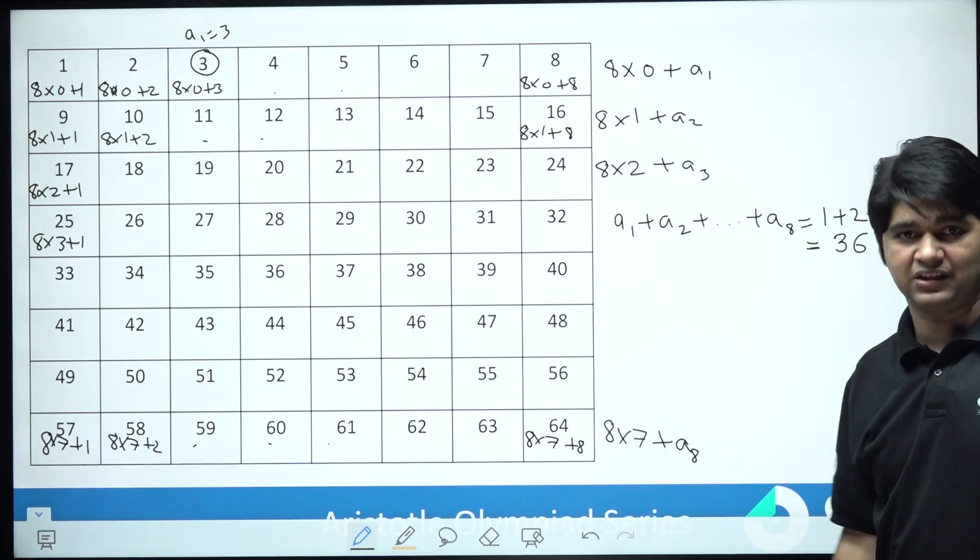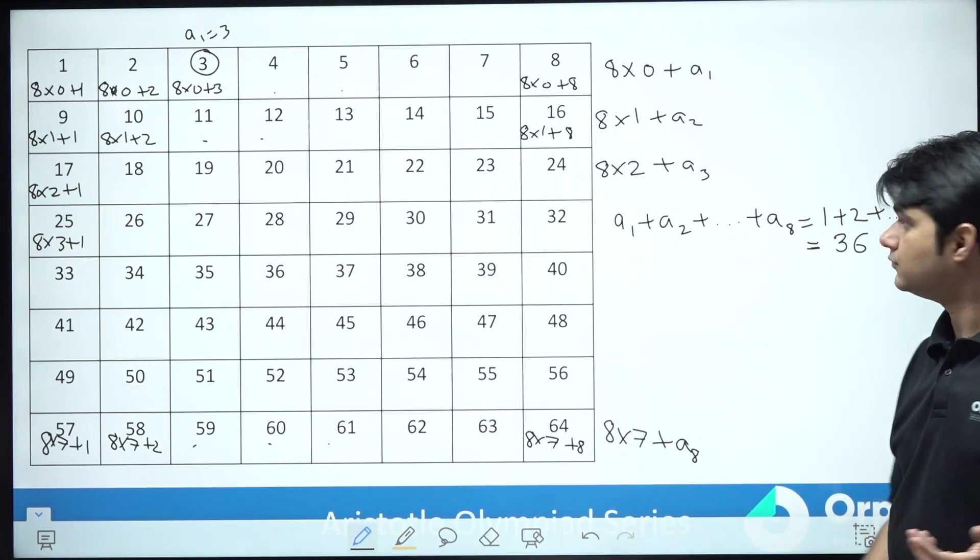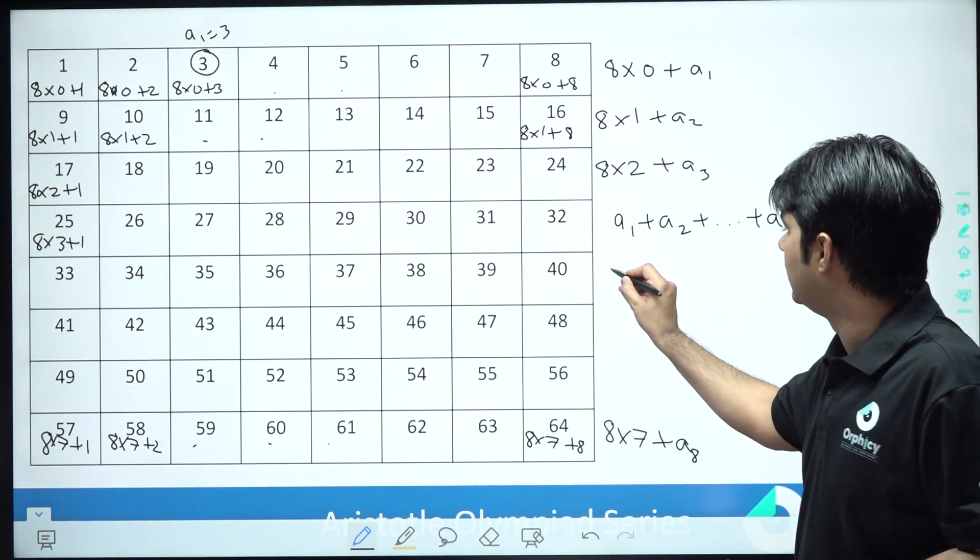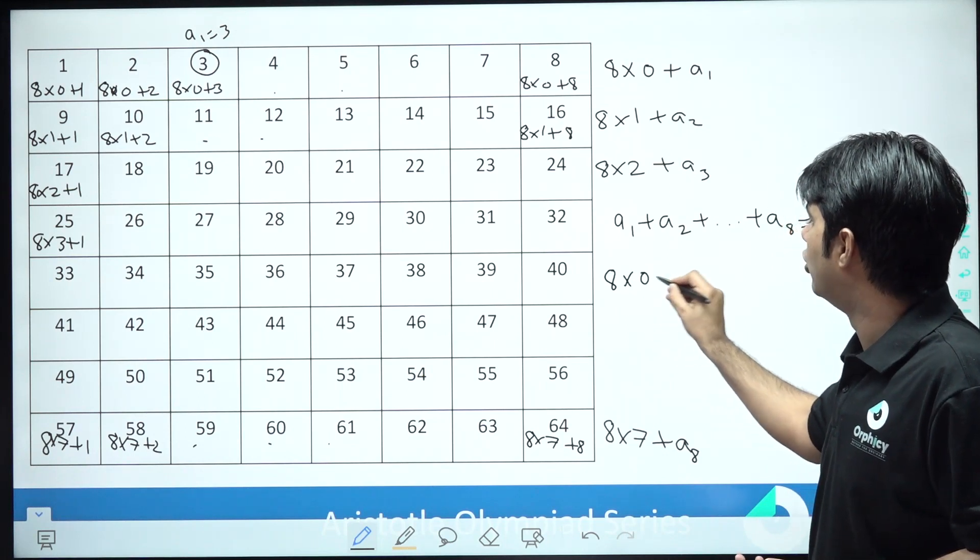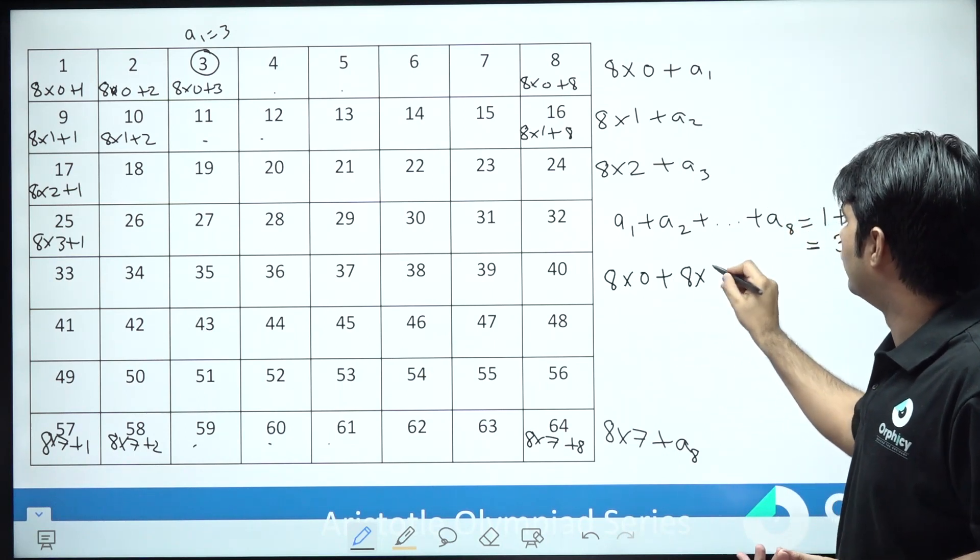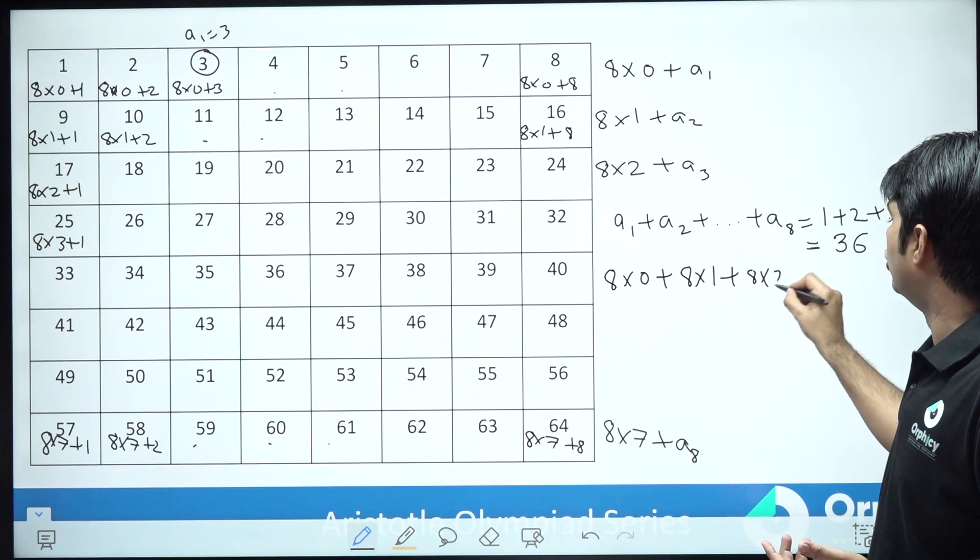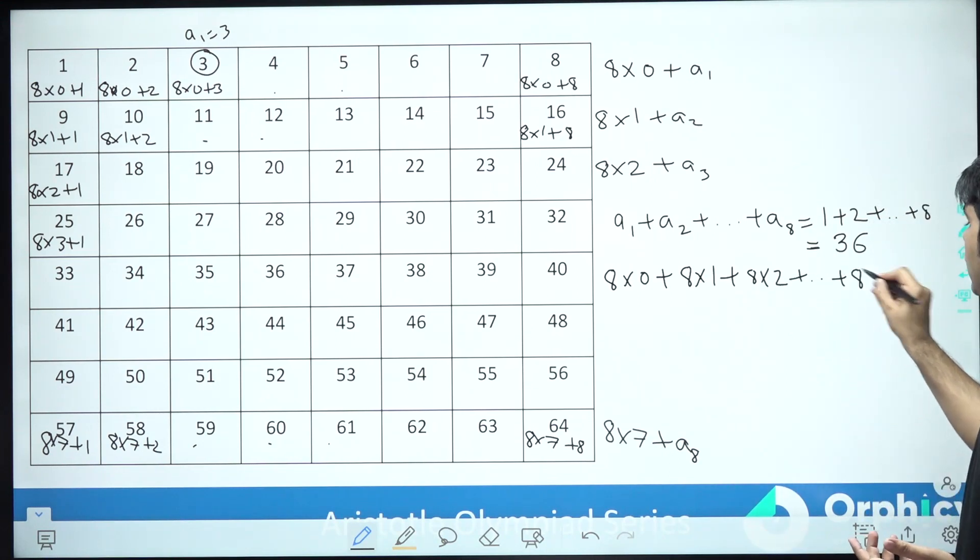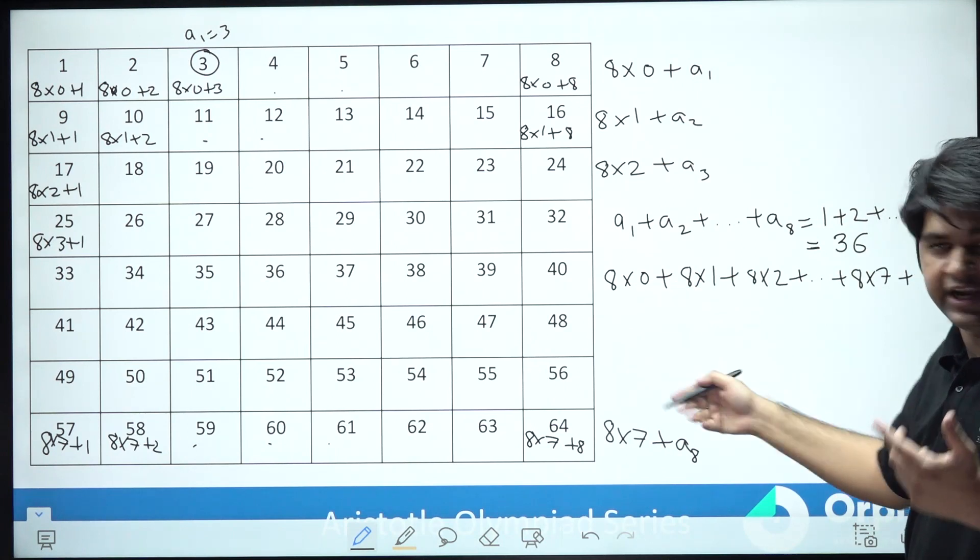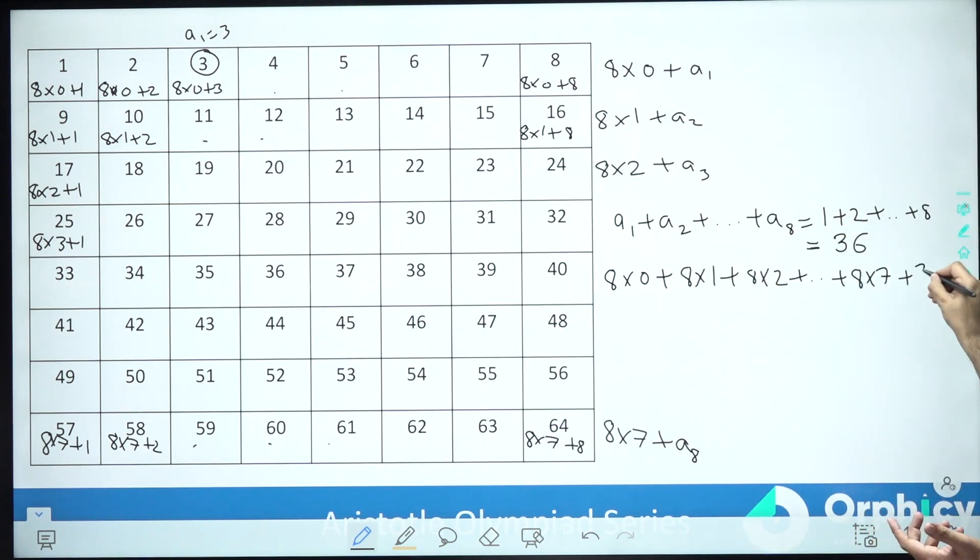Now the sum is nothing but 8 into 0 plus 8 into 1 plus 8 into 2 and so on till 8 into 7, and plus A1, A2, A3 through A8 which I know is nothing but 36.